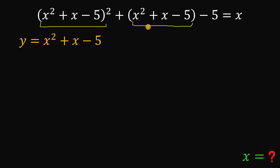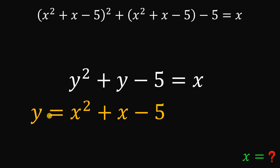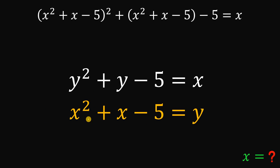Now let's replace all occurrences of that expression with y. Our original equation becomes y squared plus y minus 5 equals x. Let's get this equation and compare them, rearranging some terms. Let's put y on the right-hand side of our equation. Notice these two equations are technically the same thing.